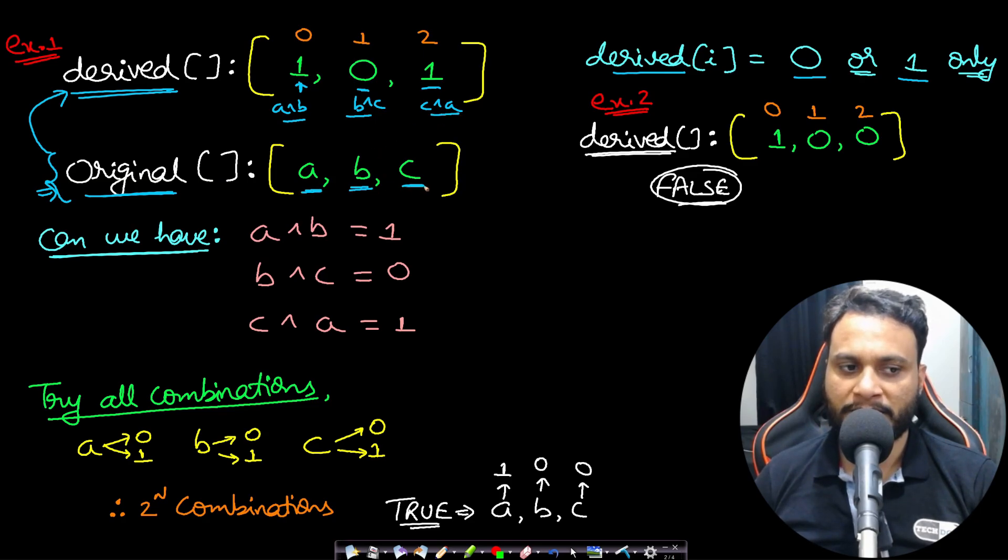Can we have a value of a, b, c in such a way that a XOR b will be 1, b XOR c will be 0, and c XOR a will be 1? So if you can have a value of a, b, c then you need to return true. Otherwise, if you cannot have it, then you need to return false.